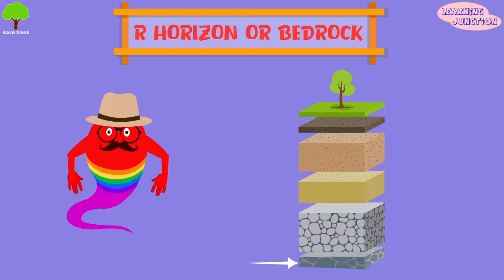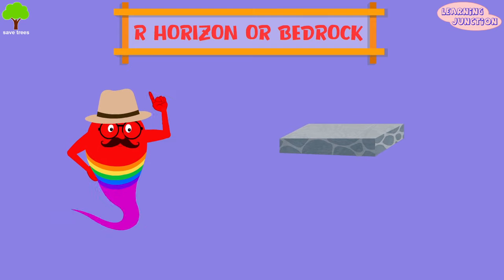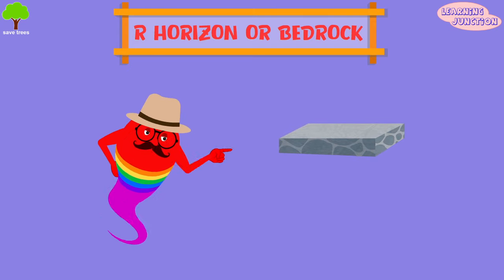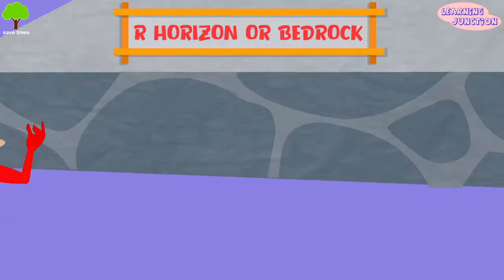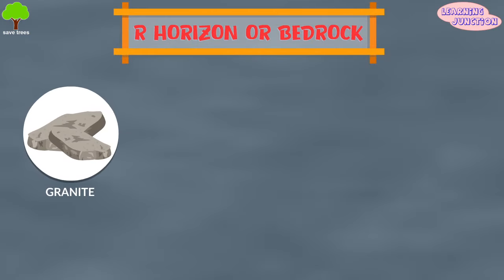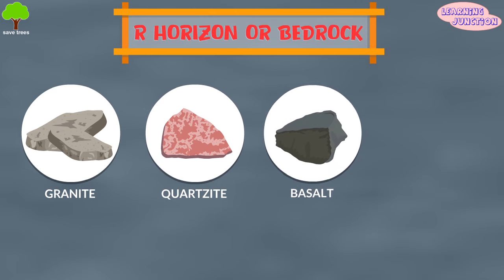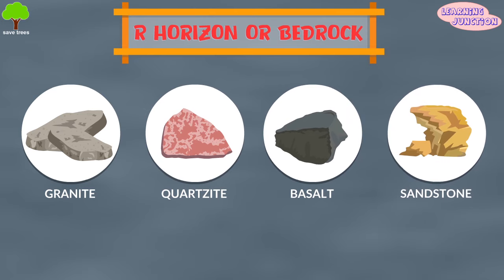R — the bedrock. This is the bottom layer, situated several feet below the surface. It is a mass of various rocks such as granite, quartzite, basalt, and sandstone.